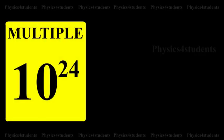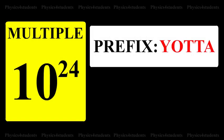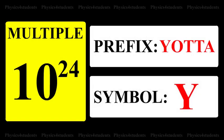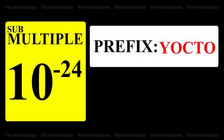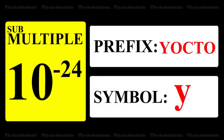10 raised to 24: prefix is Yotta, symbol is Y. Submultiple is 10 raised to minus 24: prefix is Yotta, symbol is Y.